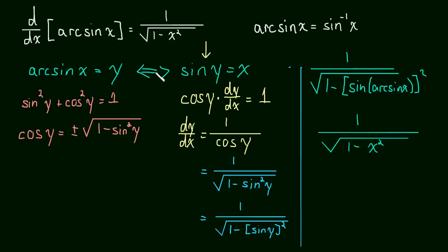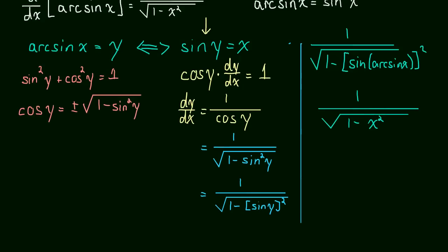So the only thing we have left to do is to explain why did we only take the positive square root. Everything else, all we did was we used this identity here to substitute cosine of y, and we took an implicit derivative. So far, so good.